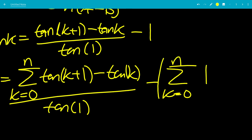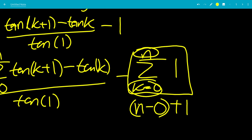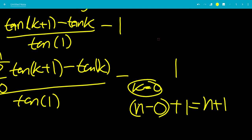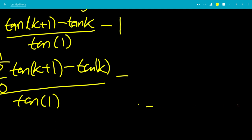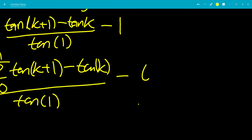Let's evaluate the sum of 1. Since it's just a constant, we take the top endpoint minus the bottom endpoint, then add 1: n minus 0 plus 1 equals n plus 1. So that sum is just n plus 1.